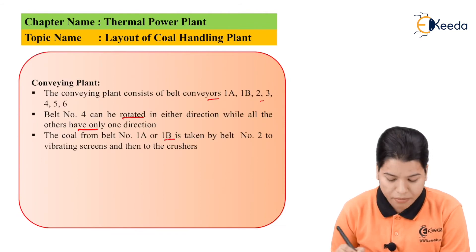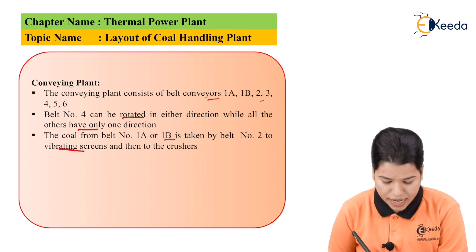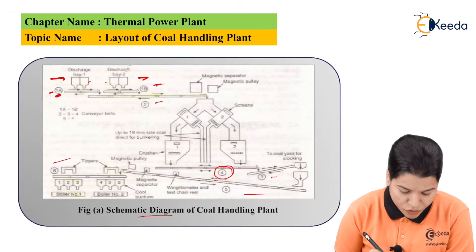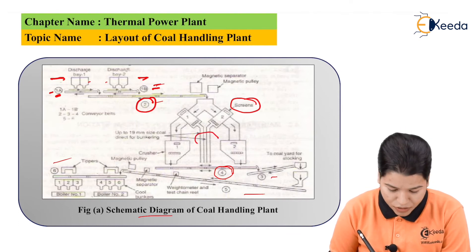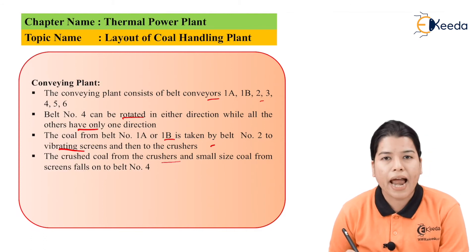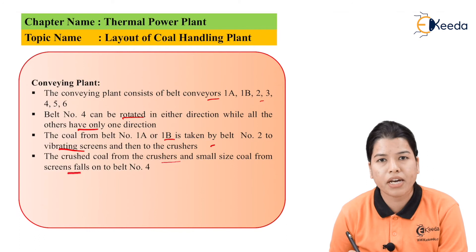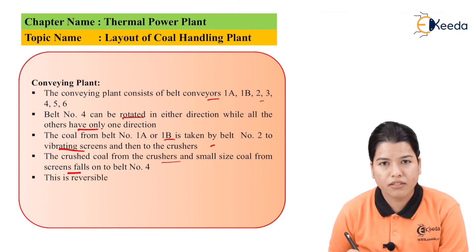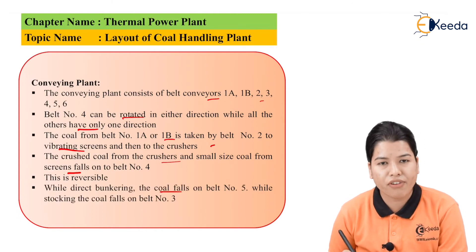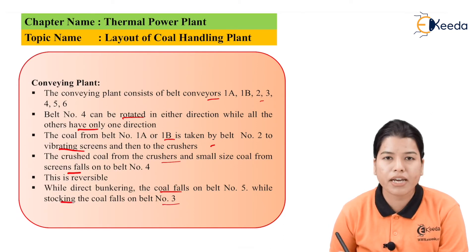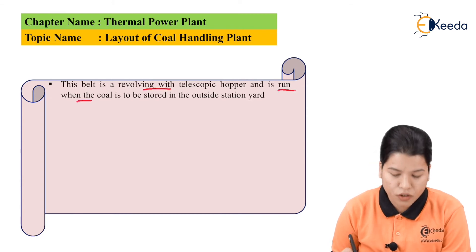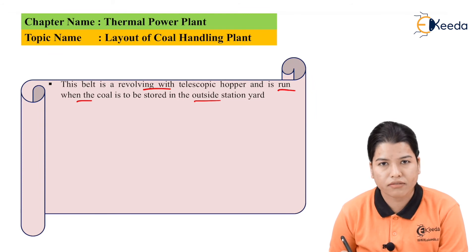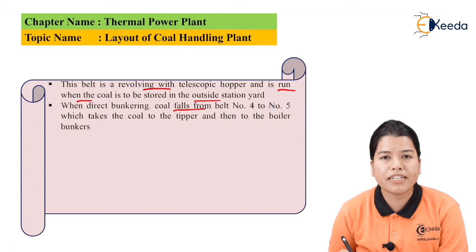The coal from belt number 1A or 1B is taken by belt number 2 to the vibrating screens and then to the crushers. As seen in the diagram, coal from belts 1A and 1B is given to belt number 2, then to the screens, and from the screens to the crushers. The crushed coal from the crusher and small-size coal from the screen fall on belt number 4. This process is reversible — with direct bunkering, the coal falls on belt number 5, while during stocking, the coal falls on belt number 3. With direct bunkering, coal falls from belt number 4 to belt number 5, which takes the coal to the tripper and then to the boiler bunkers.